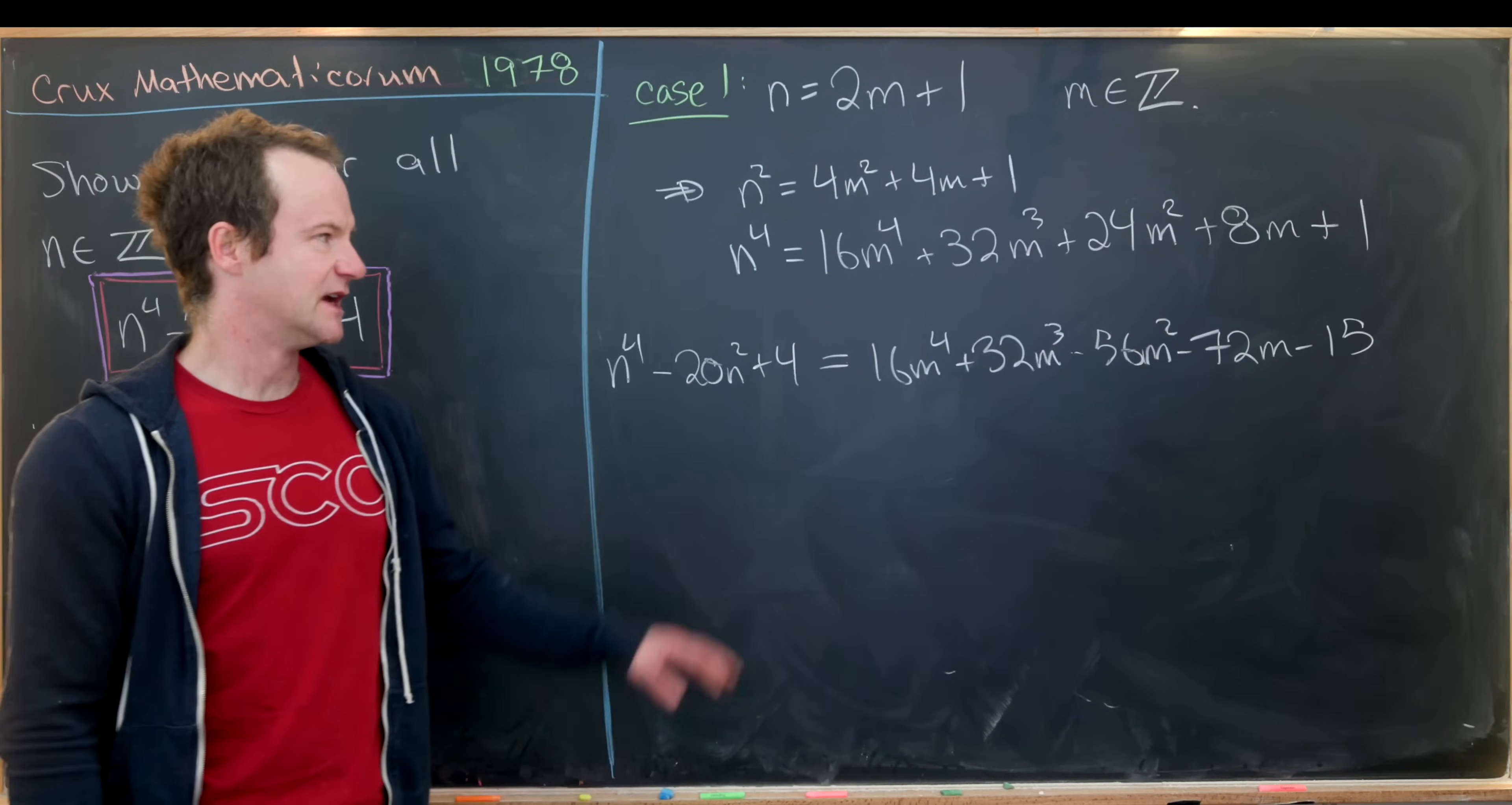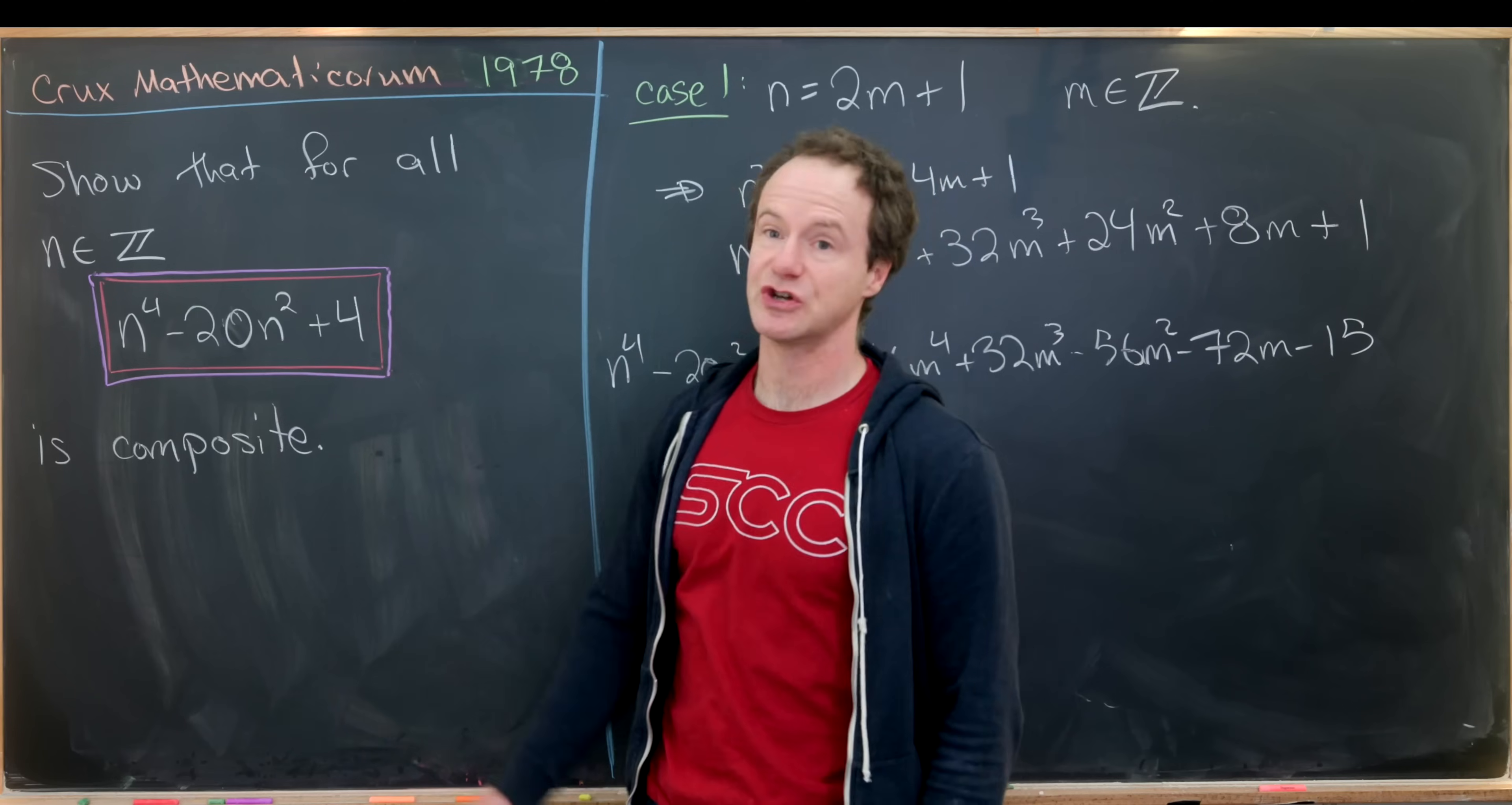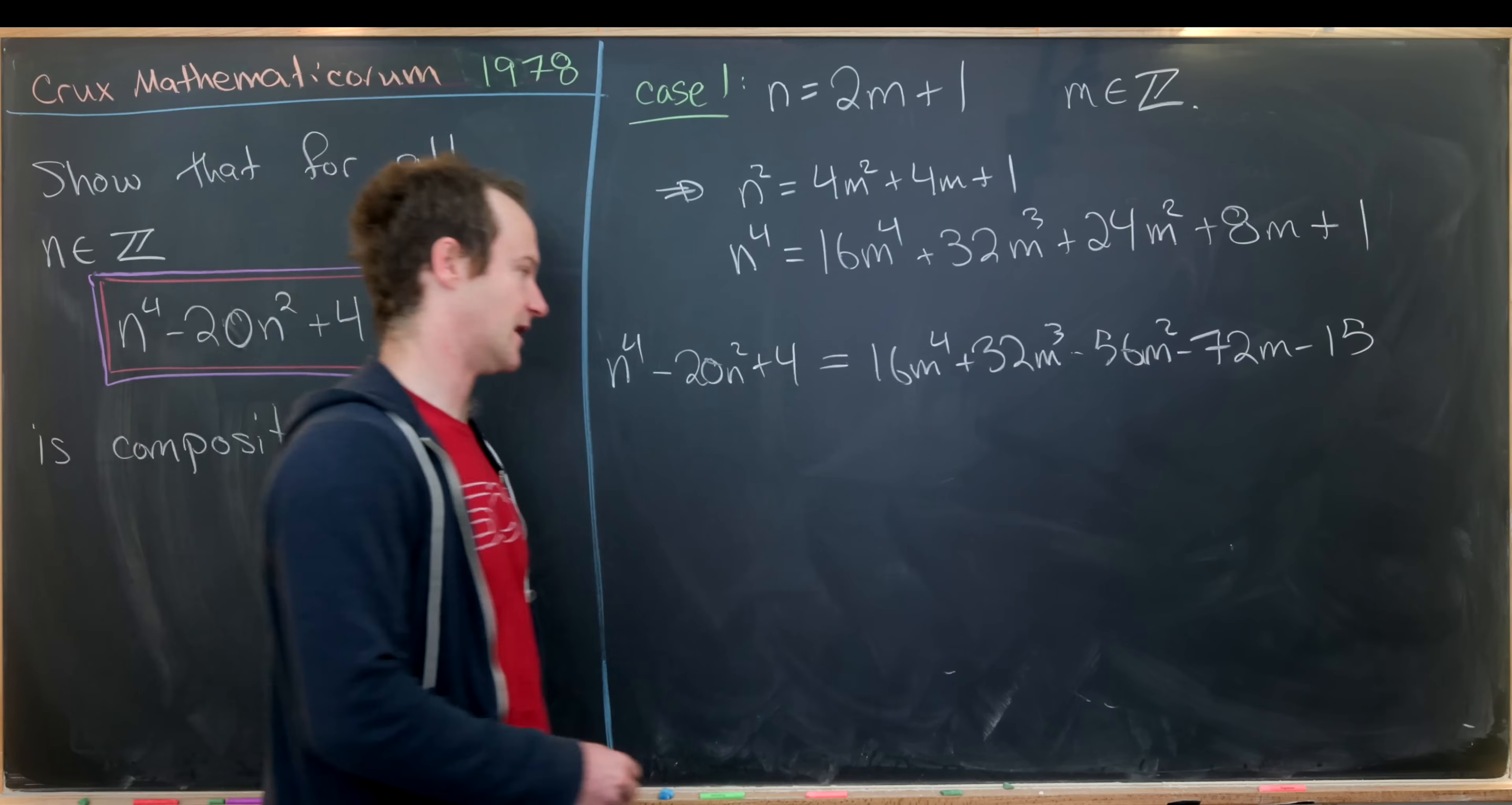Now we can take our object, n to the fourth minus 20n squared plus 4, and combine all the like terms. We'll get 16m to the fourth plus 32m cubed minus 56m squared minus 72m minus 15. Now looking at this, it's not super clear if we can factor it or not immediately. And in fact, if I was just given this, I would never really try to factor it. But since the goal of the problem is to show this is composite, that means this must factor. And furthermore, since this is a contest problem solving type setting, the factorization should not be too hard to find.